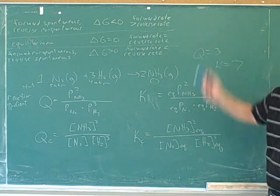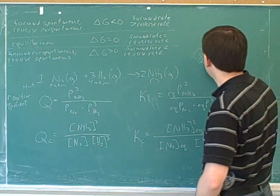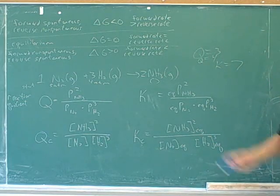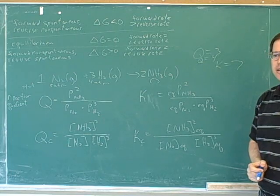All right? So which row of the table would that put us in? The first. Yeah. How about if Q is equal to 4? Same. Yeah. So when we're in this first row, what's the relationship between Q and K? Q is smaller than K.